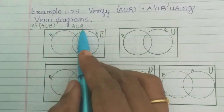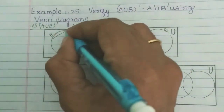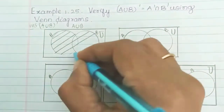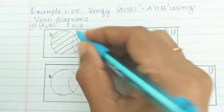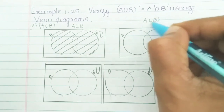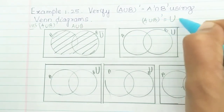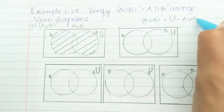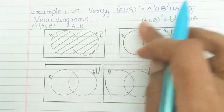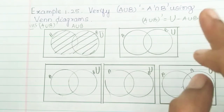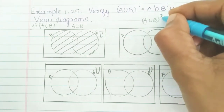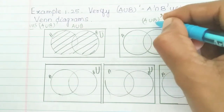So A union B the whole dash — firstly, A union B. That means A union B, and we will shade A and B. Shade A union B. Next, A union B whole dash — what does it mean? Universe will remove A union B. The universe will shade and it will remove A union B.